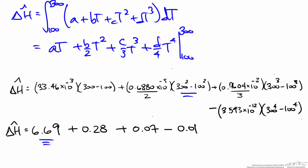Looking at these four terms independently, we see that the majority of the change in enthalpy is derived from the first term. This demonstrates that assuming a constant heat capacity will get us pretty close. The higher-order terms with the b, c, and d coefficients fine-tune that first term. Combining all four terms, we find that the change in specific enthalpy is equal to 7.03 kJ per mole.